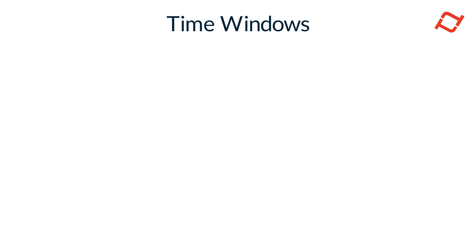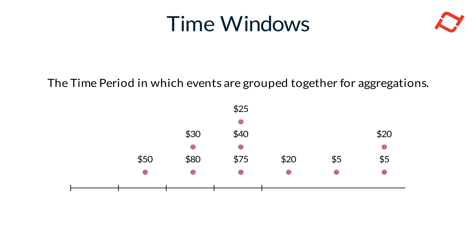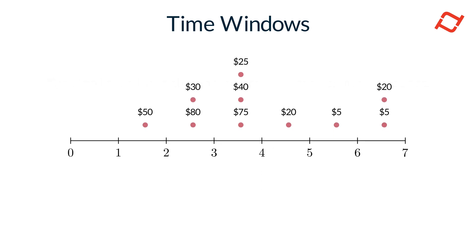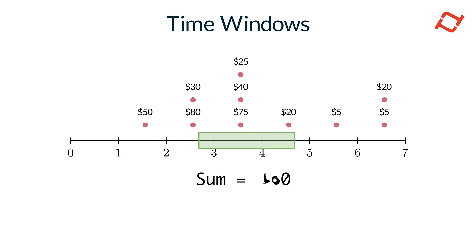The aggregation time window defines the period over which data is grouped and aggregated to produce features. In the following example, you can observe how the aggregated sum evolves as a two-day window shifts over time.